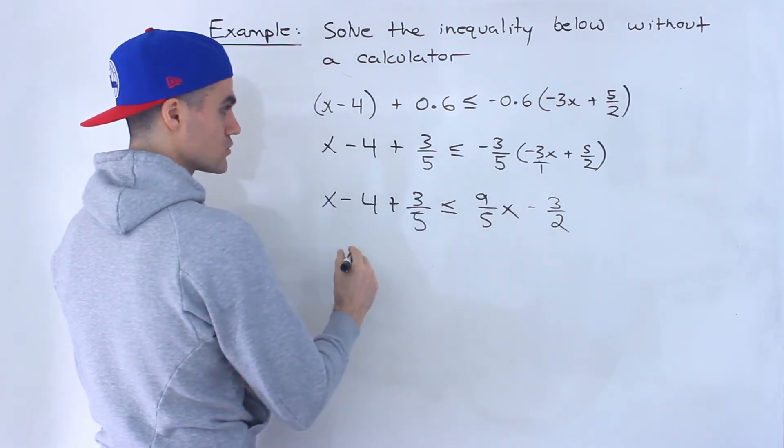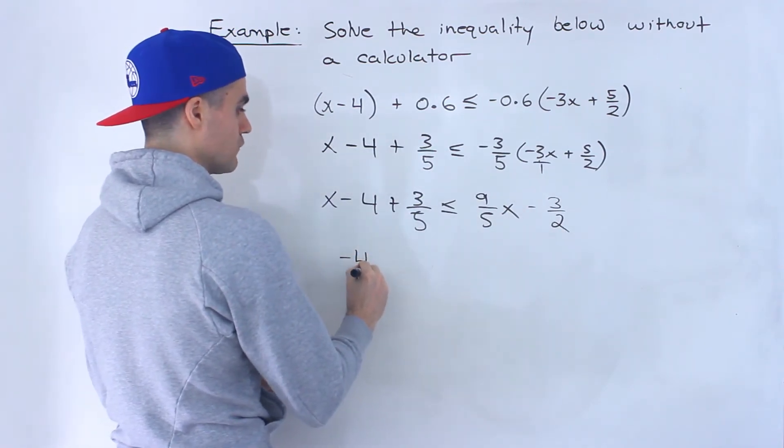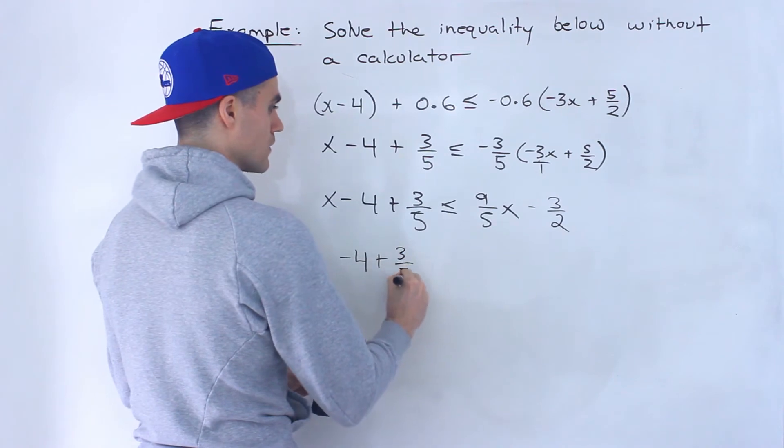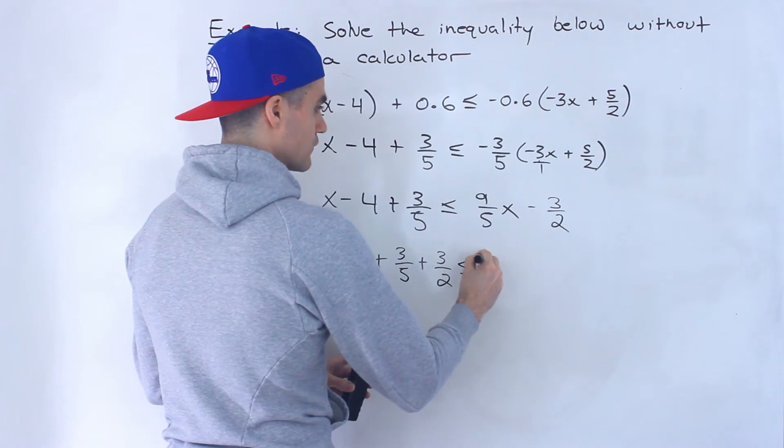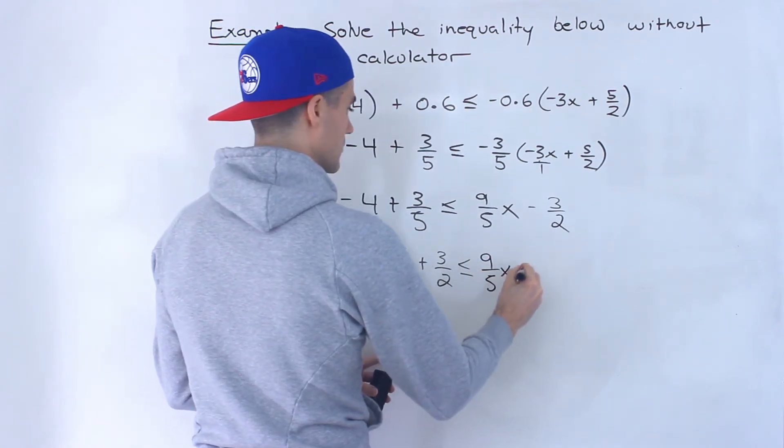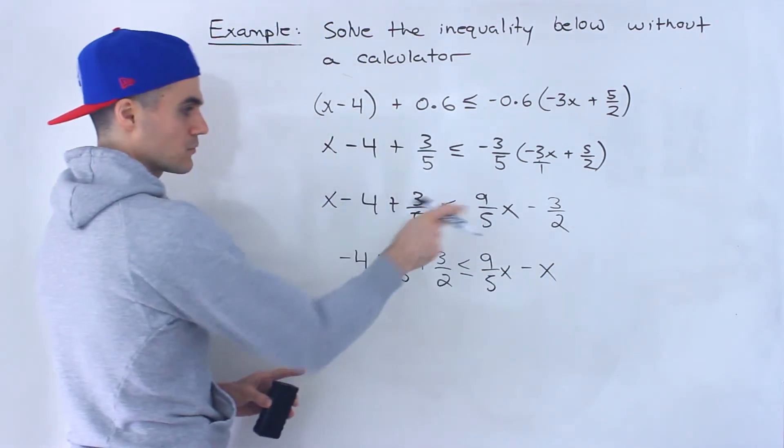This negative 3 over 2, I'll bring over to the left. So I'll have negative 4 plus 3 over 5 plus 3 over 2. And then I'll have 9 over 5x minus x when I bring that to the right side.